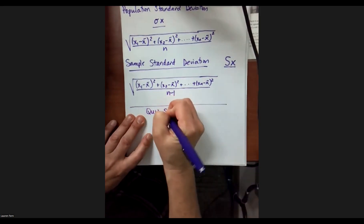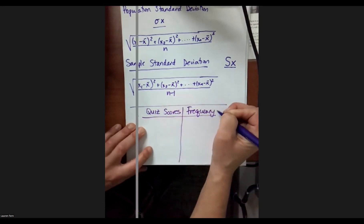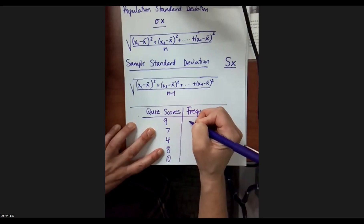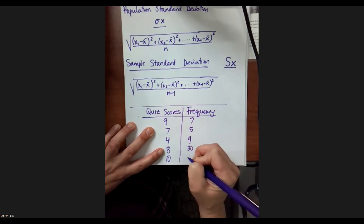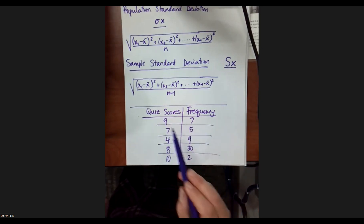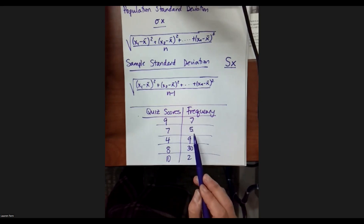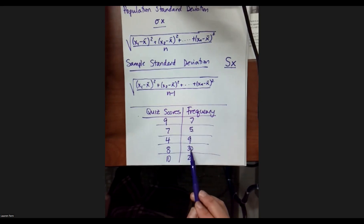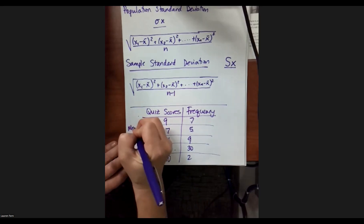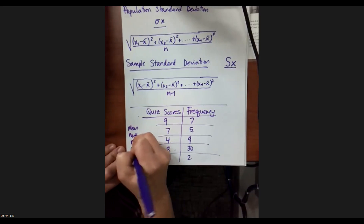For example, we can have quiz scores and a frequency column — just to give you a little more practice with pushing buttons. Suppose we have quiz scores: 9, 7, 4, 8, and 10, with corresponding frequencies. So seven people got a 9 out of 10, five people got a 7 out of 10, nine people got a 4 out of 10, thirty people got an 8 out of 10, and two people got a perfect score. What if I asked you to find the mean, the median, the mode, and the standard deviation?